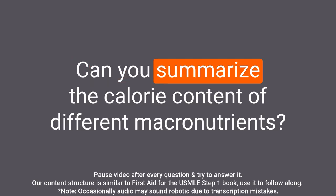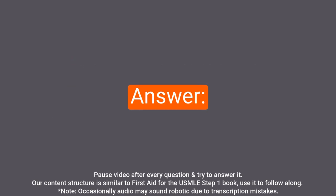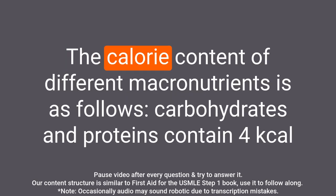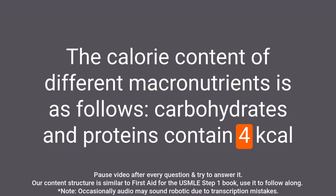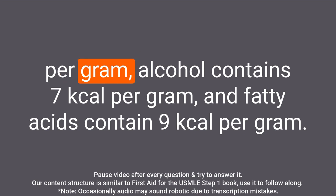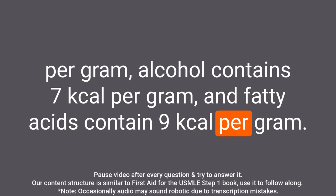Question: Can you summarize the calorie content of different macronutrients? Answer: The calorie content of different macronutrients is as follows: carbohydrates and proteins contain 4 kcal per gram, alcohol contains 7 kcal per gram, and fatty acids contain 9 kcal per gram.